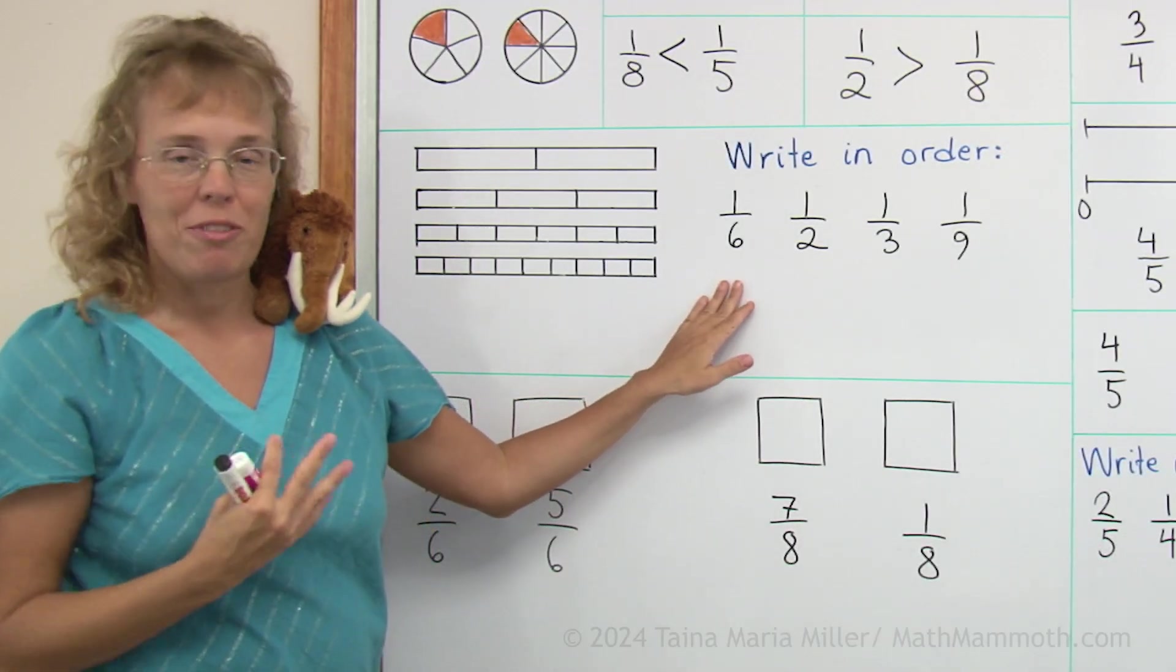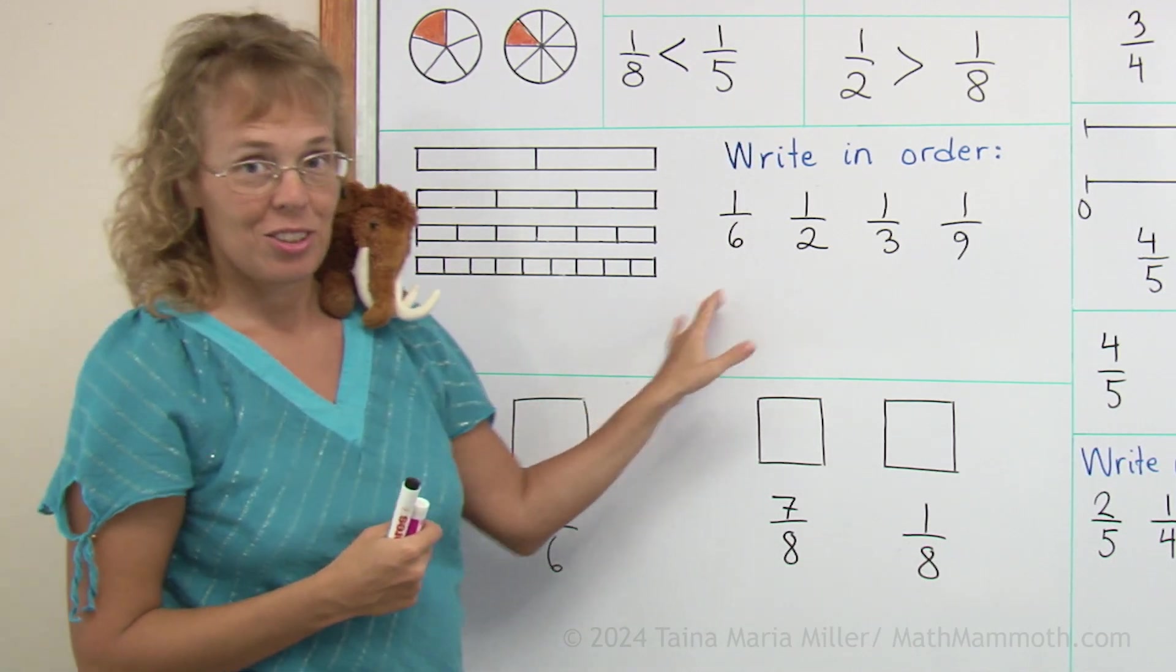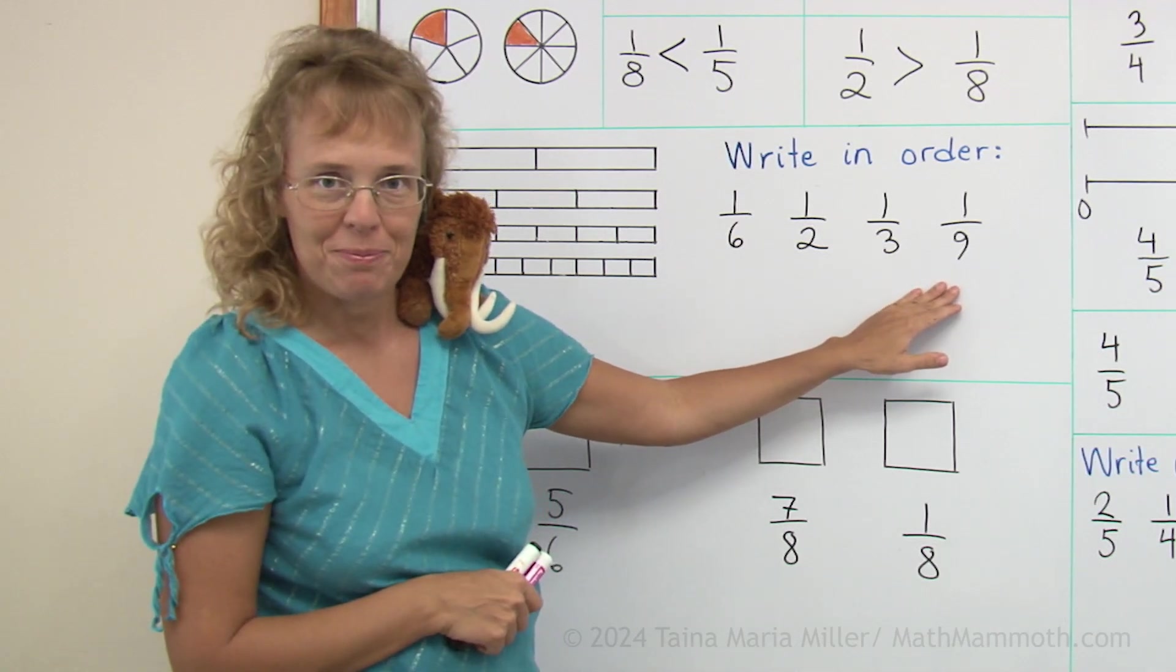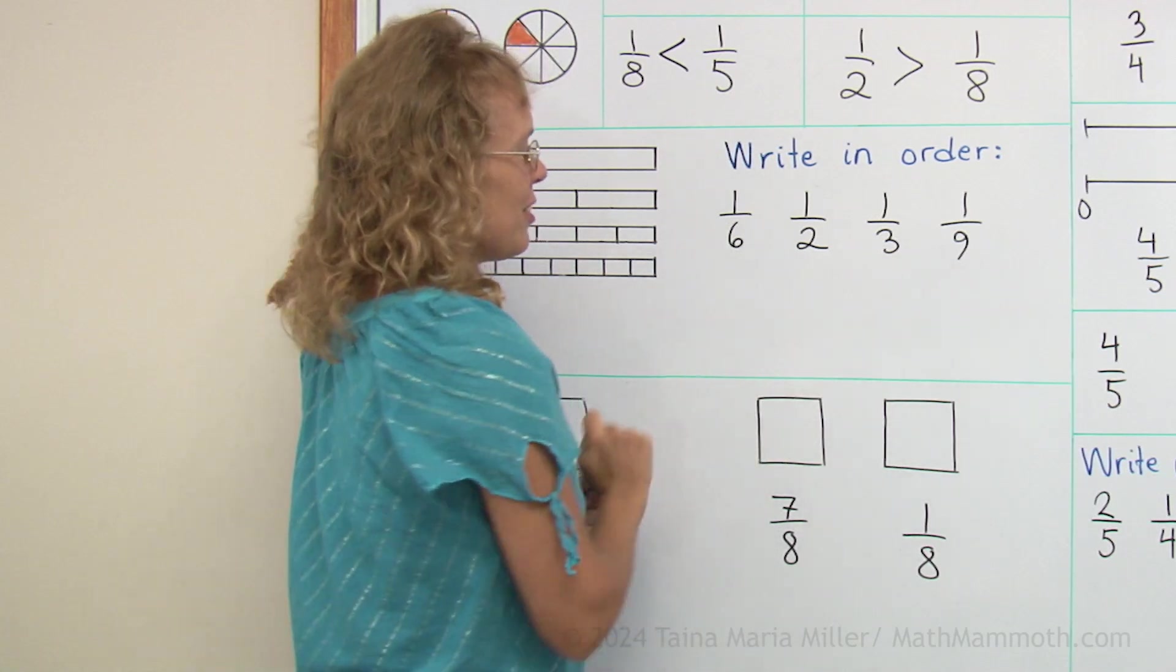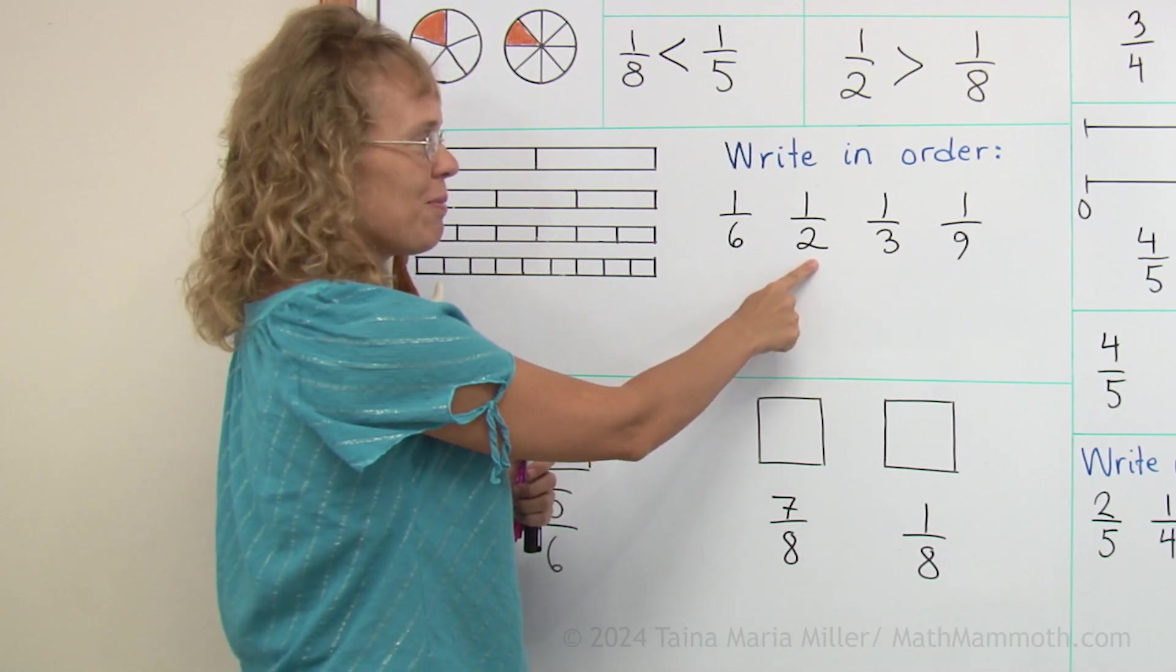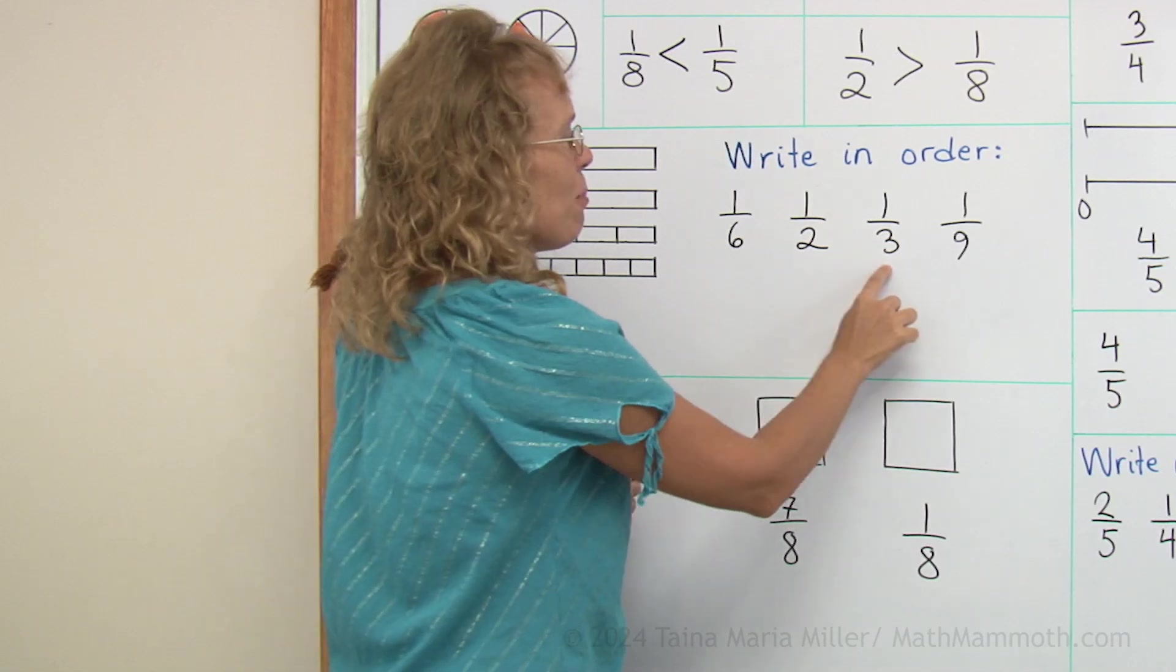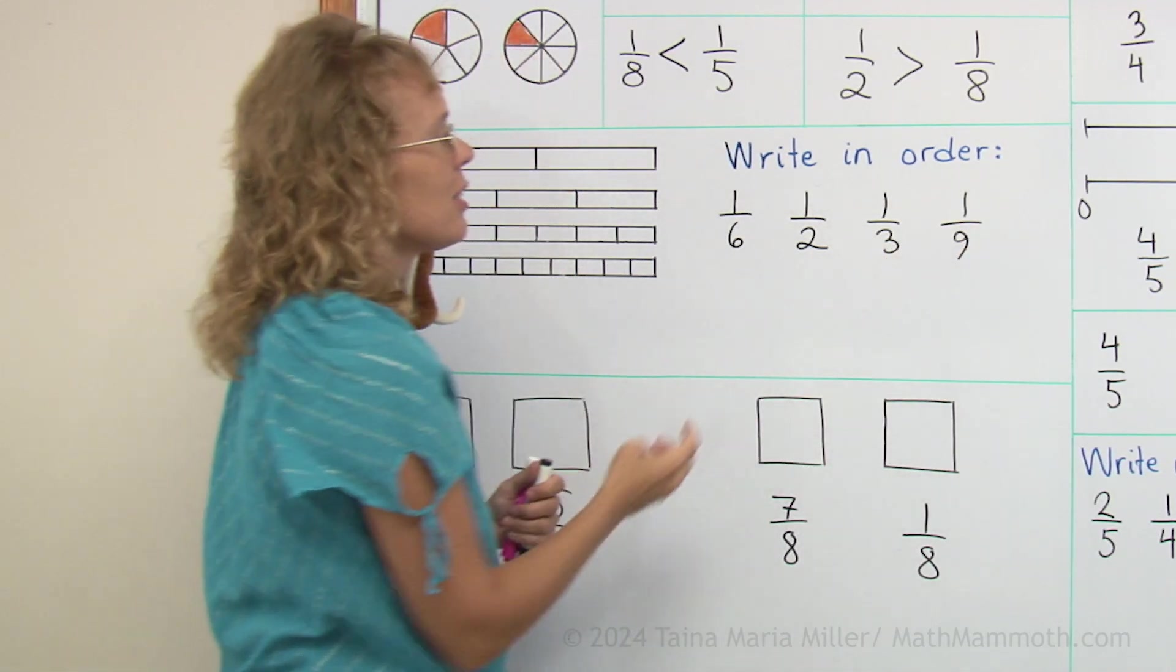Over here I have four fractions and we're going to write them in order from the smallest to the greatest. Which fraction would be the smallest? You can look at these numbers: six, two, three, and nine. But the smallest fraction is not the one with the smallest number here. Instead just the opposite works. We find the biggest number here, nine, so then one ninth is the smallest piece, smallest fraction.